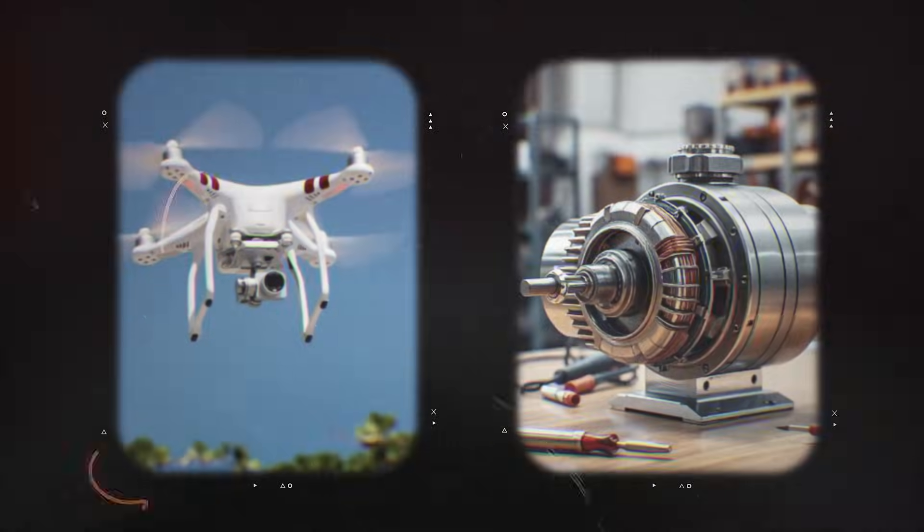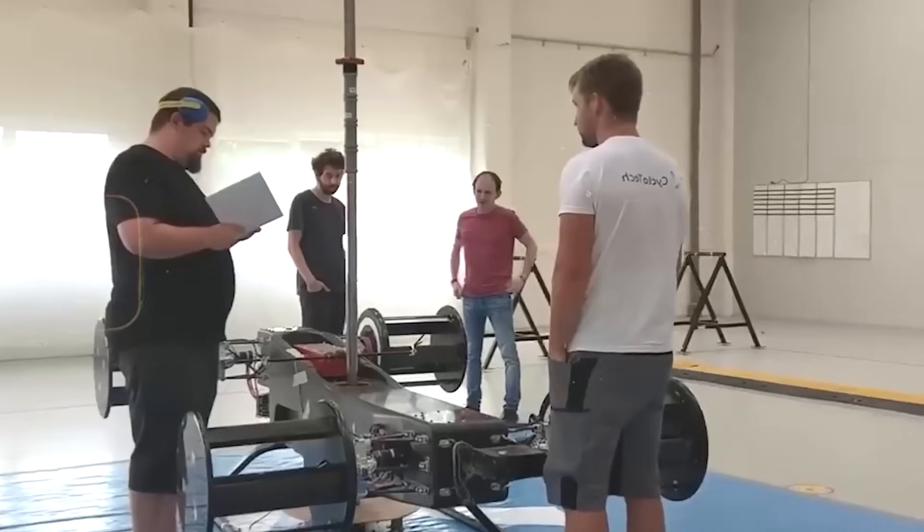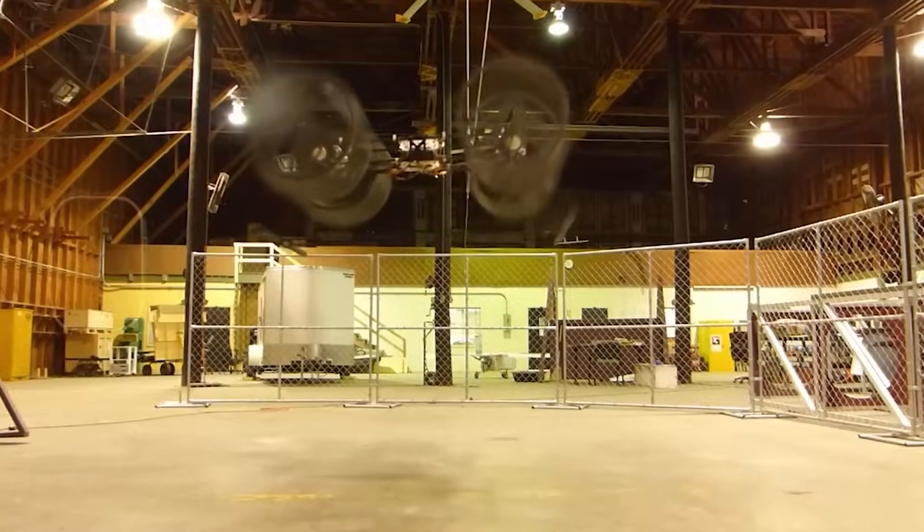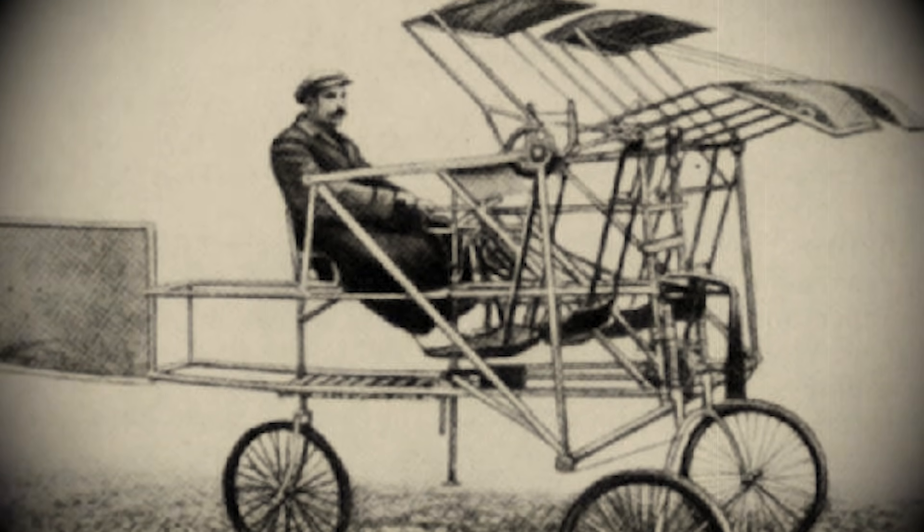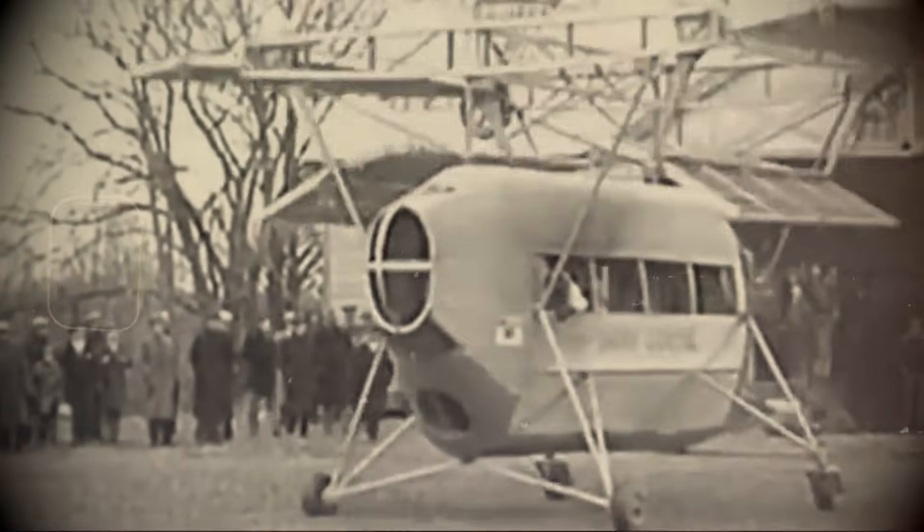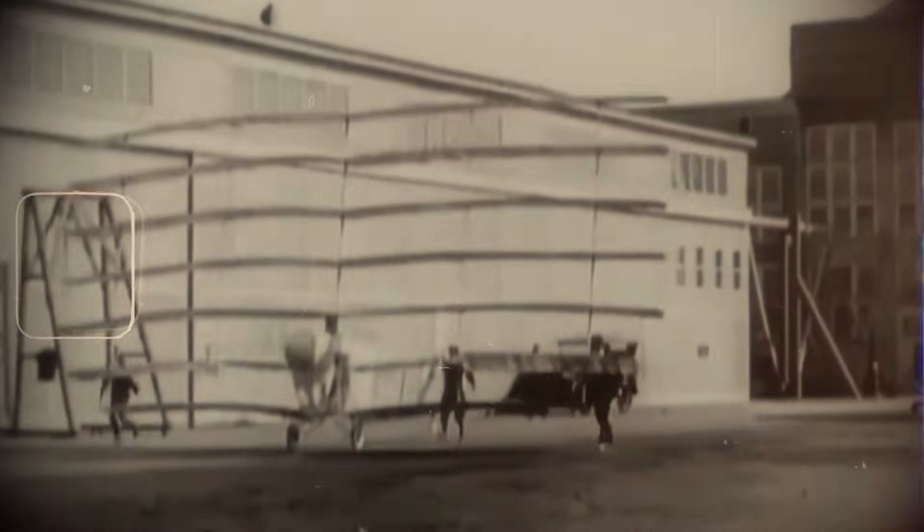The idea behind cycloidal propulsion is far older than most people realize. Long before drones, electric motors, or lightweight composites existed, engineers were already imagining new ways to move vehicles through air and water. In 1909, Russian military engineer E.P. Sverchkov designed a strange aircraft concept known as the Samoljot. Instead of traditional wings or propellers, it relied on rotating, paddle-like structures. The vehicle never flew, but it marked one of the earliest serious attempts to explore cycloidal motion for propulsion.